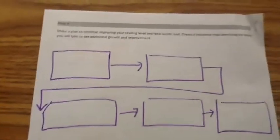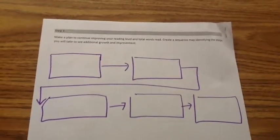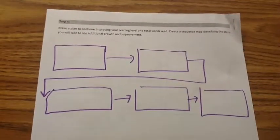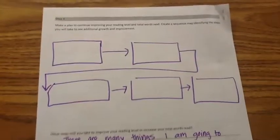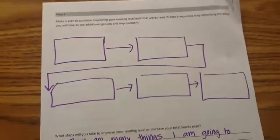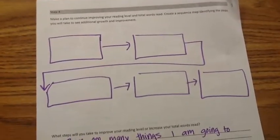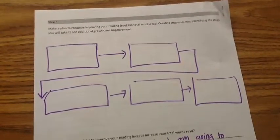Step four asks us to make a plan to continue improving your reading level and your total words read. Create a sequence map identifying the steps you will take to see additional growth and improvement. You can see that I've set up a frame with five steps. You are going to have five steps also. So think about the things that you need to do. Whether you're looking to read more words, or you're looking to raise your Lexile level. What are the things that you will do to see the improvement that you're looking for?